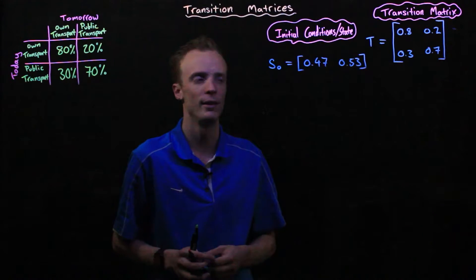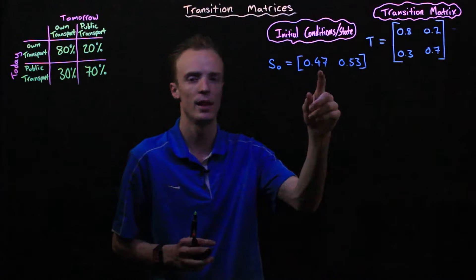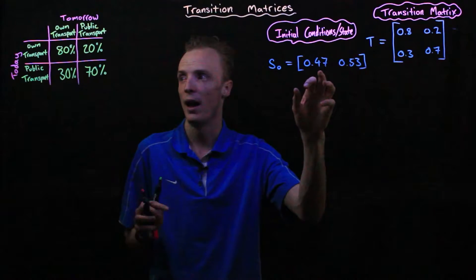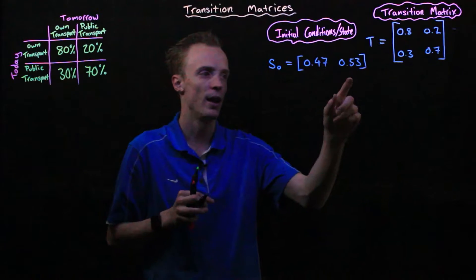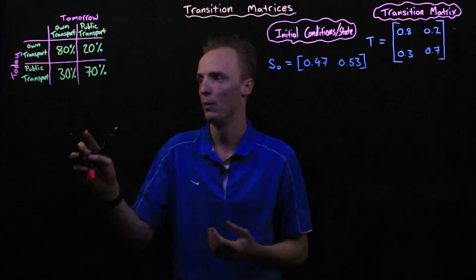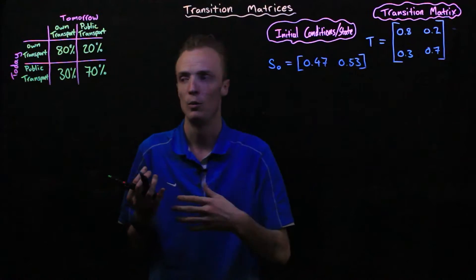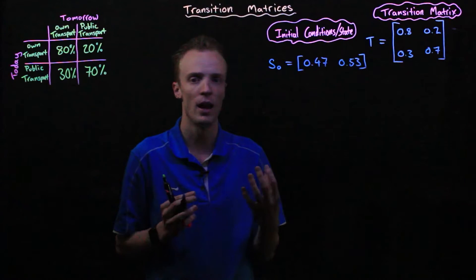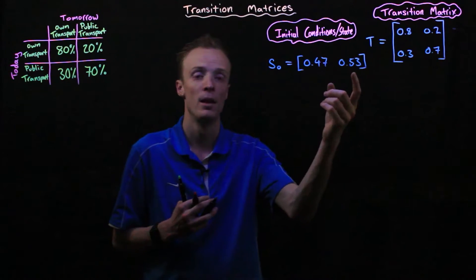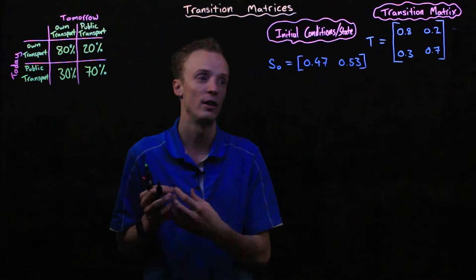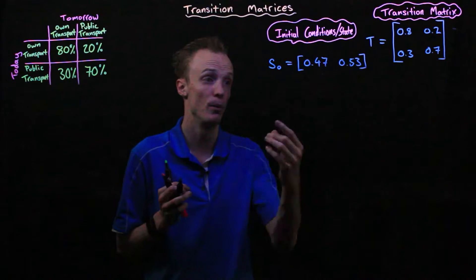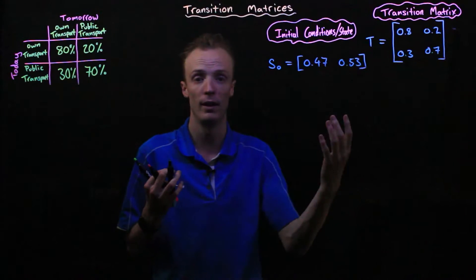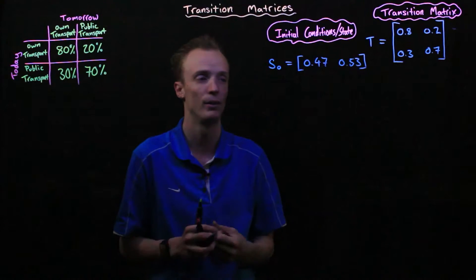We represent S₀ with 0.47 for own transport and 0.53 for public transport on day 0, when we interviewed these people. You could put the actual number of people instead, but you must use one or the other — you can't mix percentages and raw counts in the same state matrix.